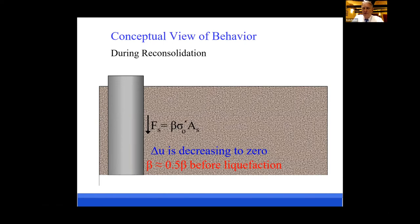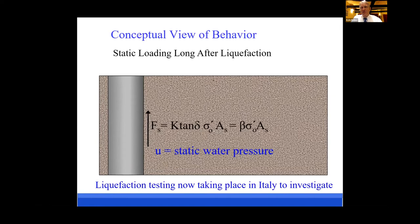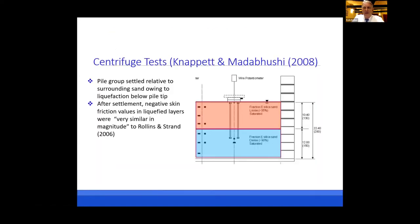From centrifuge tests, Knoppa and Matabushi had a different system but reported negative skin friction values very similar to what we reported in our 2006 study.